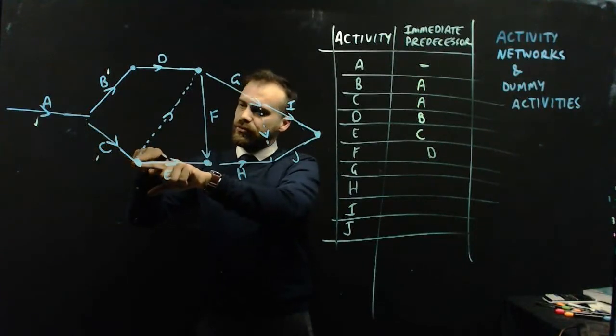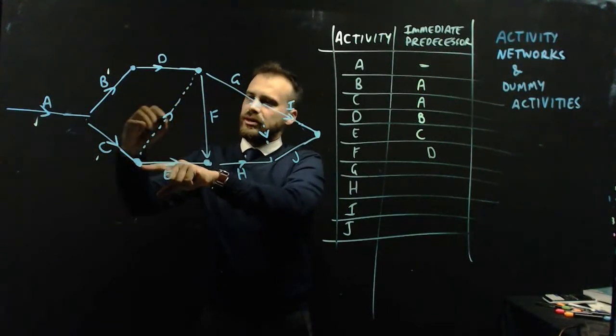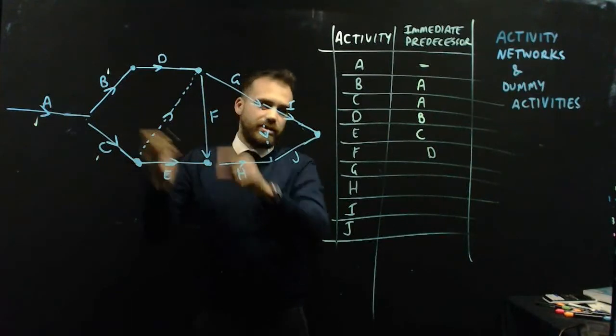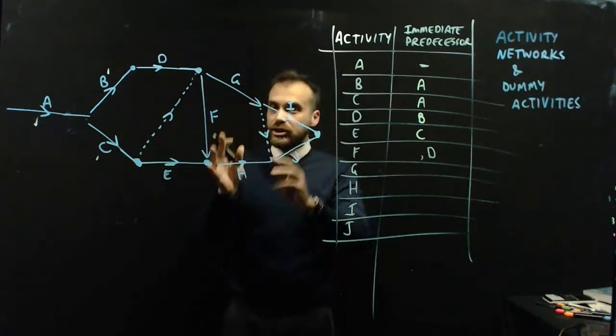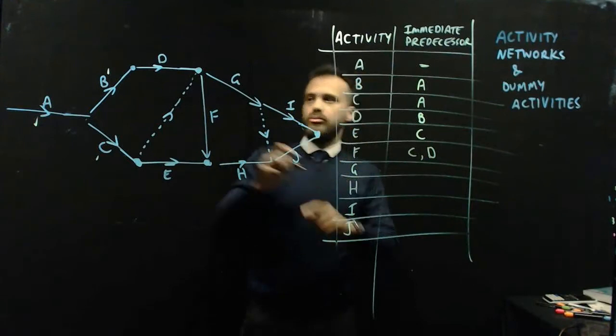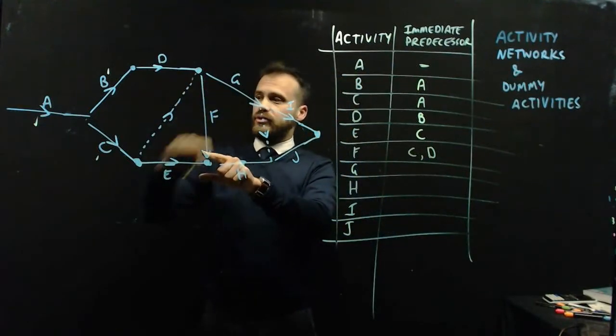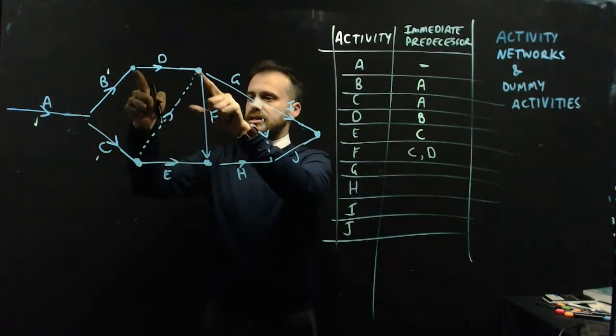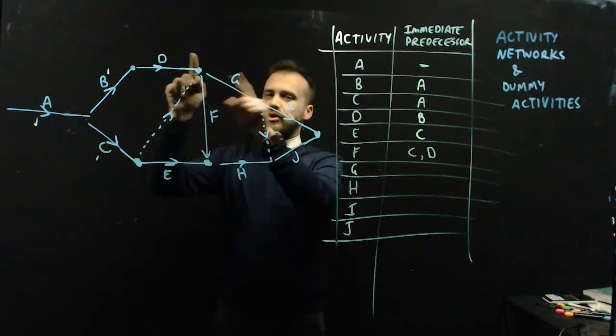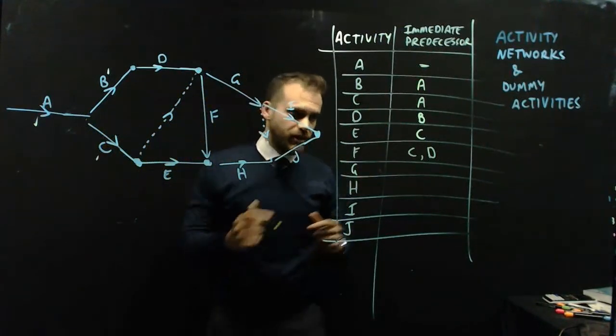So we can call it like C in a bit or something like that. But it's actually just C. Before you do F, you have to do C and D. We just can't draw two lines with C. So we use this thing, a dummy activity.